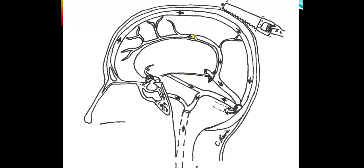Practicing on an unlabeled section: here is the falx cerebri, the dural reflection into the interhemispheric fissure. Here is the superior sagittal sinus, the inferior sagittal sinus, the great vein of Galen, and the straight sinus. The straight sinus and superior sagittal sinus join at the confluence of sinuses. Then the transverse sinus, sigmoid sinus, internal jugular vein, and the superior and inferior petrosal sinuses.